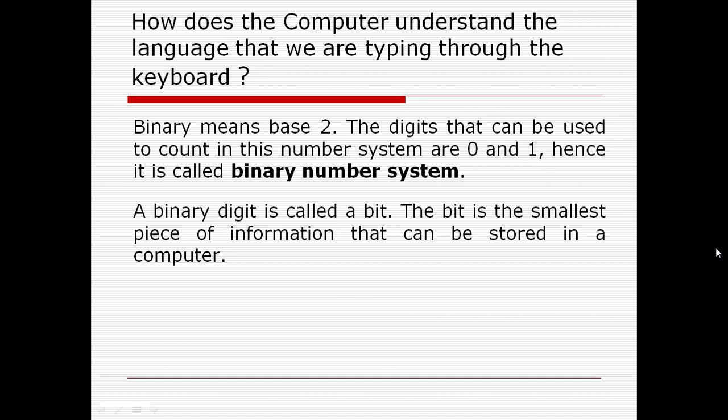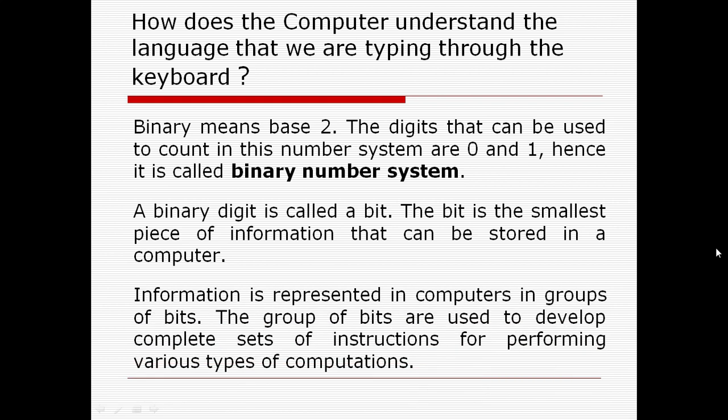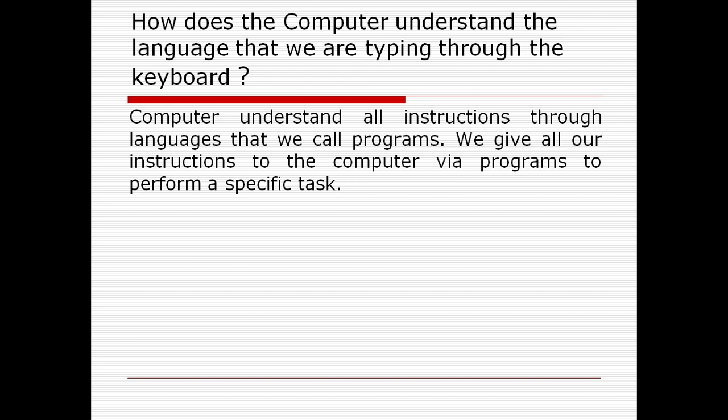A binary digit is called a bit. A bit is the smallest piece of information that can be stored in a computer. Information is represented in computers in groups of bits. The groups of bits are used to develop complete sets of instructions for performing various types of computations. Computers understand all instructions through languages that we call programs. We give all our instructions to the computer via programs to perform a specific task. That's why computer programming languages come into the picture.